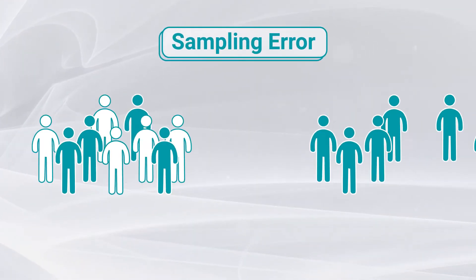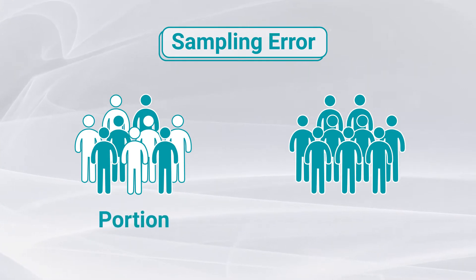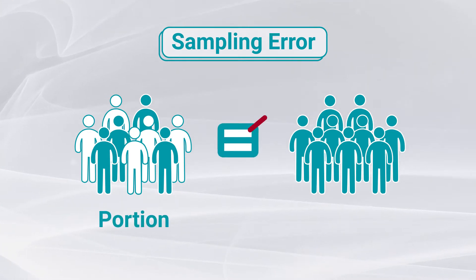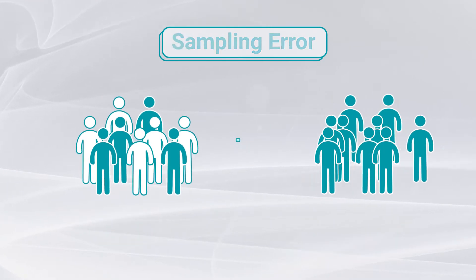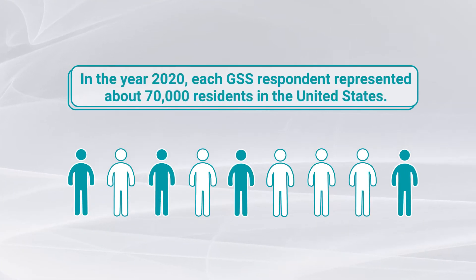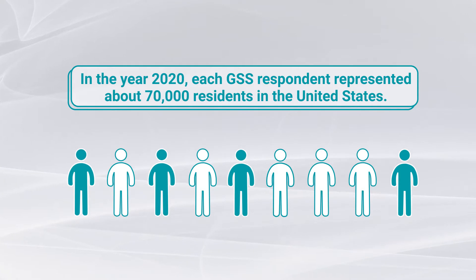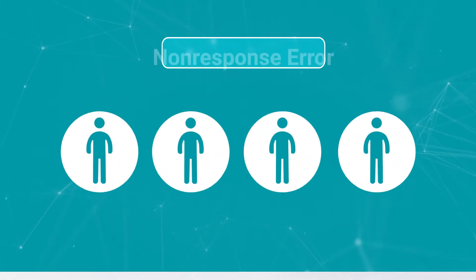Sampling error occurs when there are differences between the estimates from surveying a portion of the targeted population versus every unit in the population, like in a census. For example, in the year 2020, each GSS respondent represented about 70,000 residents in the United States.